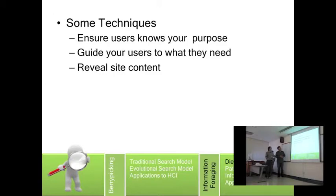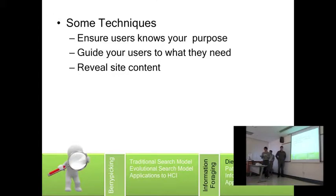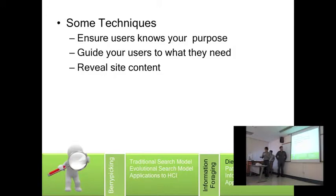Some techniques for diet selection: first, ensure that users know what your website is for. For example, if your website gives recipes, make sure they know it is a recipe website. Second, guide your users to what they need — you can do this by adding a search feature, or by putting a recommendation link. Lastly, review the site content by summing up what you have on your homepage.